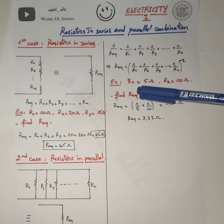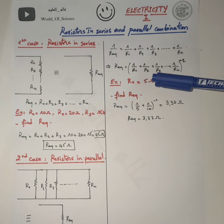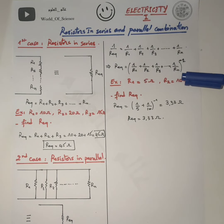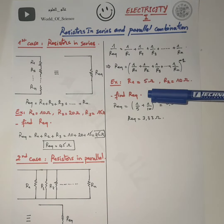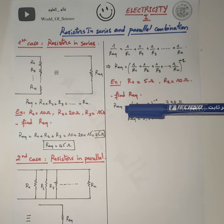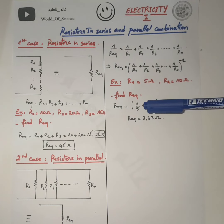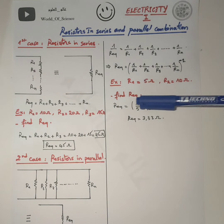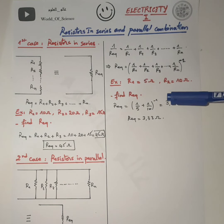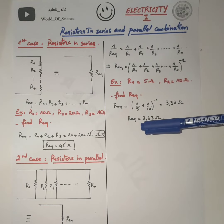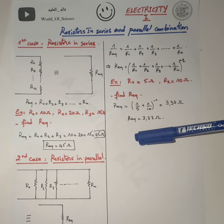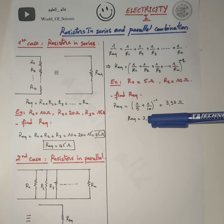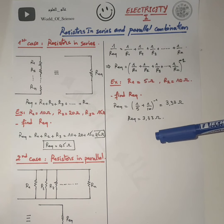Let's take an example. If we have R1 equal 5 ohm and R2 equal 10 ohm, find R equivalent. R equivalent is simply equal to (1 over 5 plus 1 over 10) to the power of minus 1. It becomes 3.33 ohm, so R equivalent equals 3.33 ohm.